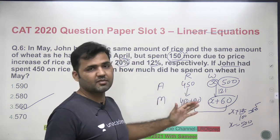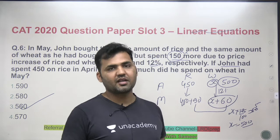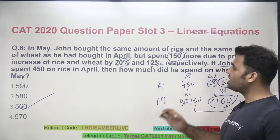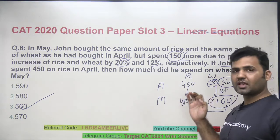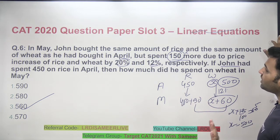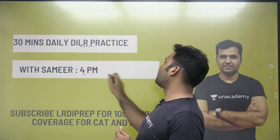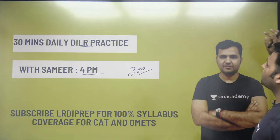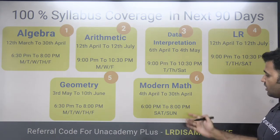What you should observe from this entire series is that every question — whether percentage, profit and loss, SICA, or maxima-minima — is based on basic concepts. None of these questions involve any advanced technical material. It's all fundamentals of percentage, profit and loss, arithmetic, and algebra — everything you'll find in any standard book.